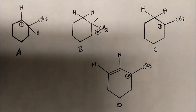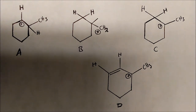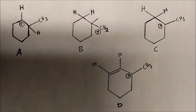Let's talk about carbocation stability — primary, secondary, and tertiary carbocations. This is going to be very important when we start talking about reactions in organic chemistry. A tertiary carbocation is always more stable than a secondary, and a secondary is more stable than a primary.